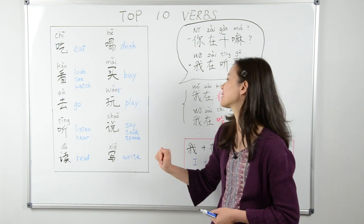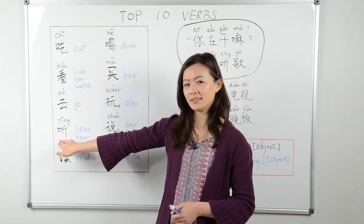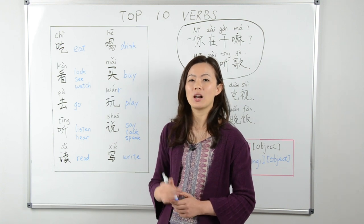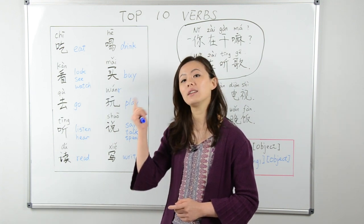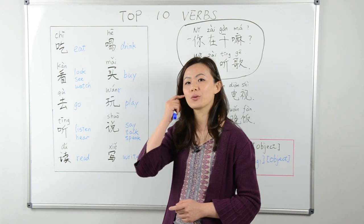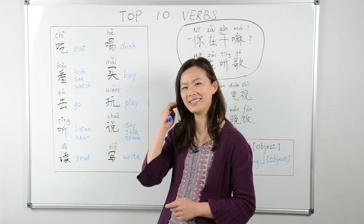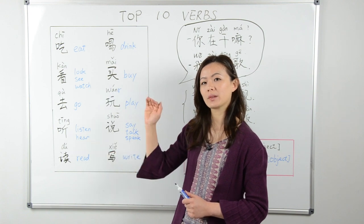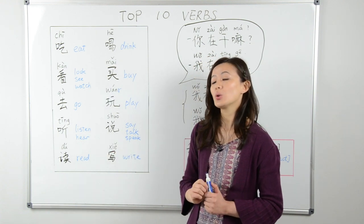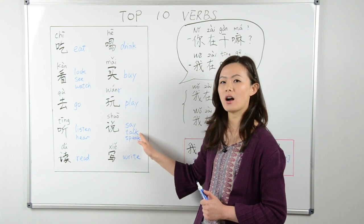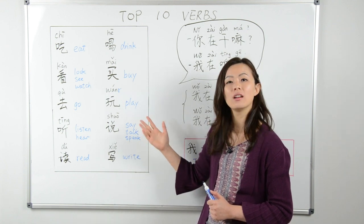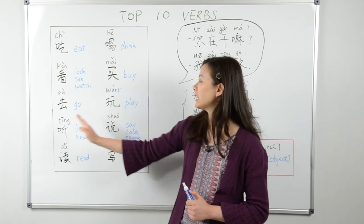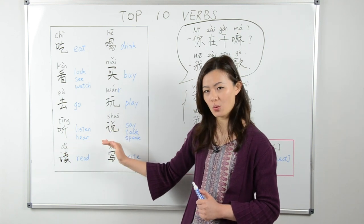Next is 听. 听 means listen or hear — anything you use your ears for is 听. And next is 说. 说 means to say, talk, speak — all of the above. 听 and 说.